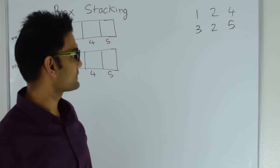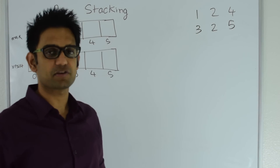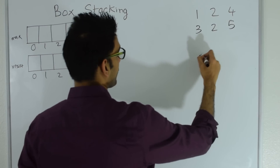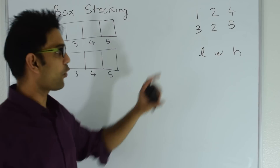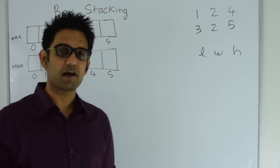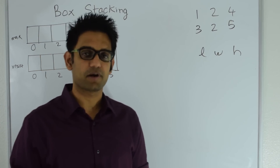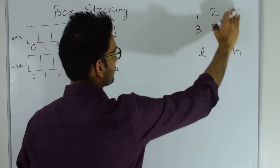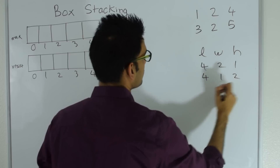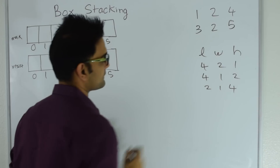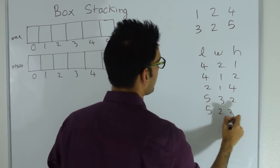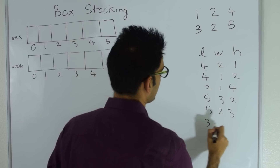I'll start with 2 sets of boxes. The first set has dimensions 1, 2 and 4, and the second set has dimensions 3, 2 and 5. I'll get all the rotations of the boxes. Without loss of generality, I'll say that length will always be greater than or equal to width. So the rotations of the first box are 4,2,1 then 4,1,2 and 2,1,4. The rotations of the second box are 5,3,2 then 5,2,3 and 3,2,5.